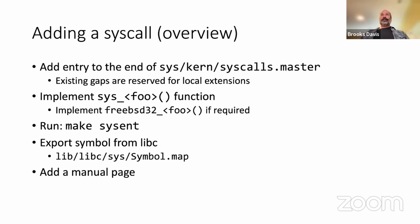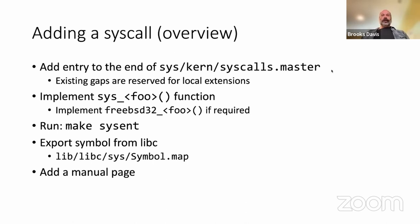That's the basics of how we get from the trap frame into calling an actual implementation — a normal C function that does the work. Now let's talk about the mechanics of adding a system call. First, once you've decided on the interface and gotten some feedback, you add an entry to syscalls.master. Then you implement the sys function, like sys_pwrite. If required you implement a freebsd32 version — I'll talk more about when that's needed. Then you run 'make sysent' at the top level of the FreeBSD tree to generate all the generated files.